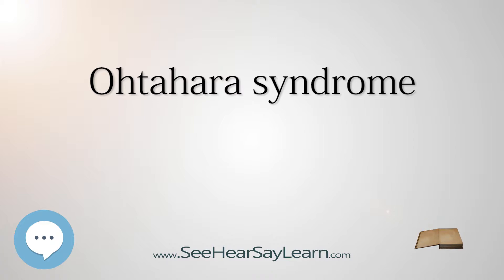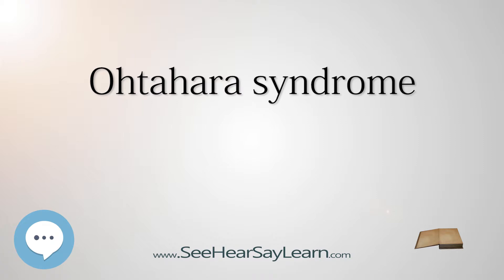The primary outward manifestation of OS is seizures, usually presenting as tonic seizures — a generalized seizure involving a sudden stiffening of the limbs. Other seizure types that may occur include partial seizures, clusters of infantile spasms, and, rarely, myoclonic seizures.